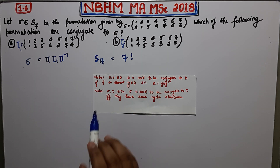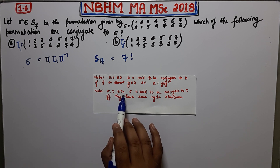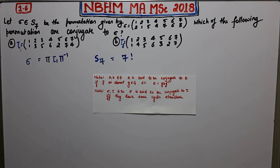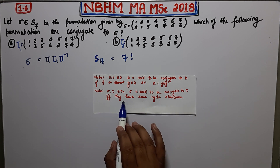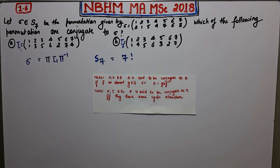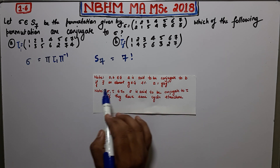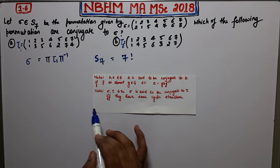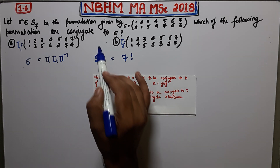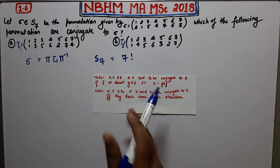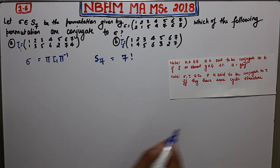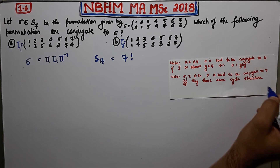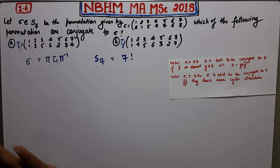Note 2 states: if sigma and tau belong to Sn, then sigma is conjugate to tau if and only if they have the same cyclic structure. This note is very important — using it, we can solve this question in seconds.